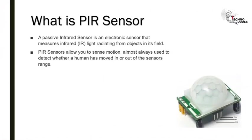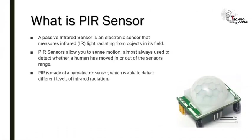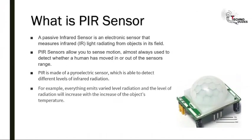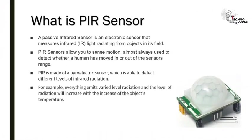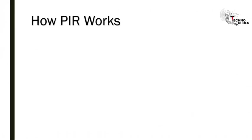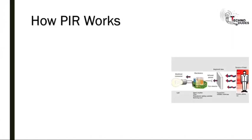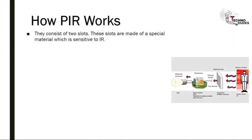The PIR sensor detects a human being moving around within approximately 10 meters from the sensor. It is made of a pyroelectric sensor which is able to detect different levels of infrared radiation. Everything emits varied levels of radiation, and the level increases with the object's temperature.